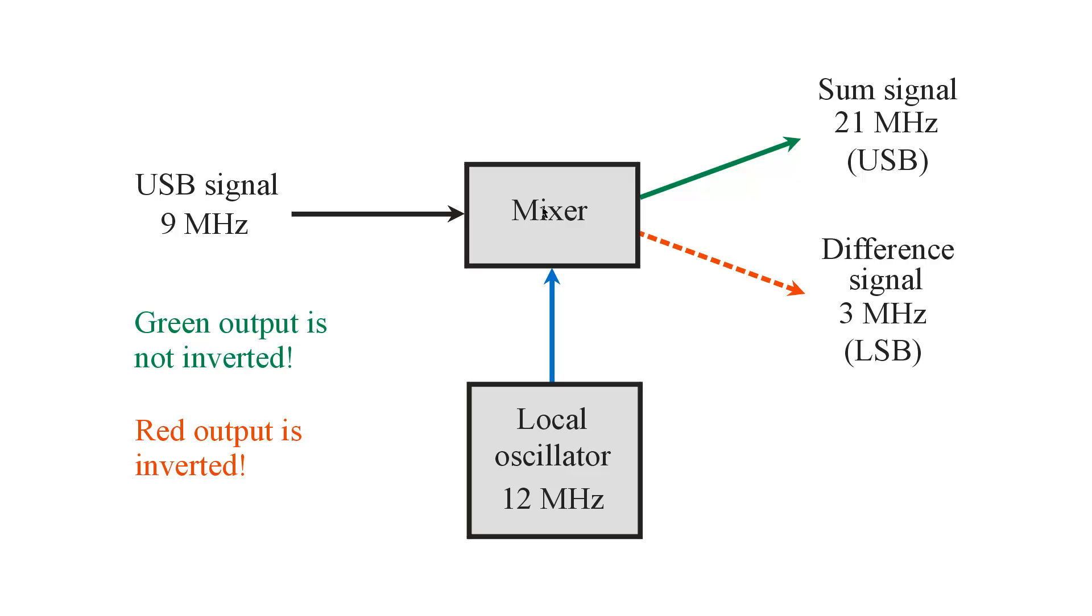When you mix a signal with another signal, you can do it in either of two ways. You can get a sum of the two frequencies, or you can get a difference of the two frequencies. In fact, in double sideband AM modulation, you can model that as an actual mixing of the audio with the carrier wave, thereby getting an upper sideband that is the sum of the audio input plus the carrier wave frequency, and the difference is the lower sideband, the difference between the audio and the carrier frequency.